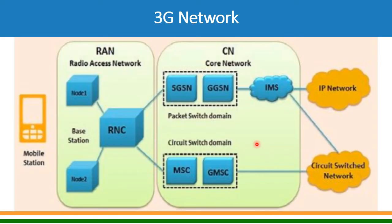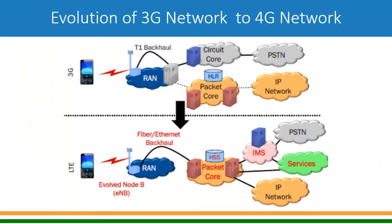So you see that the 3G network has both a circuit-switch domain and a packet-switch domain. Let us look at the evolution from 3G to 4G and what changes were made. In 3G you had a circuit core and a packet core — circuit core for voice and packet core for data.